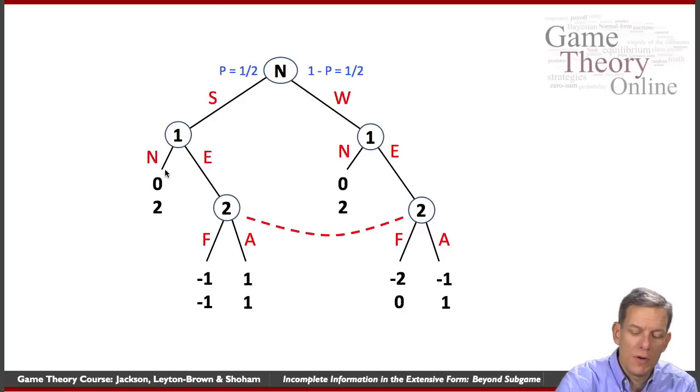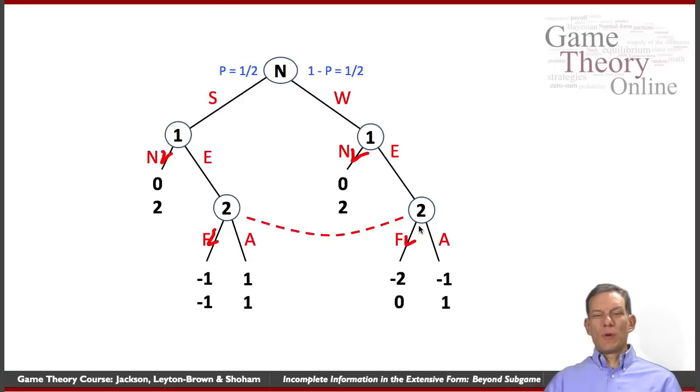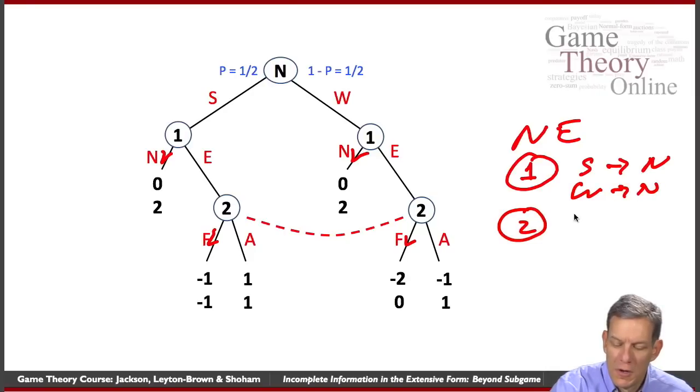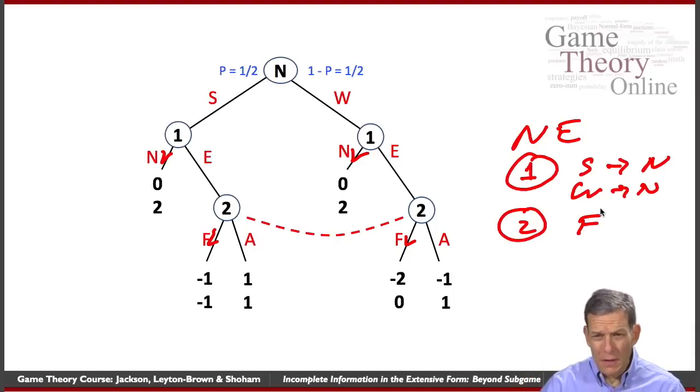So let's take a peek at one where firm one does not enter. So no matter what, firm one does not enter, whether they're strong or weak. And firm two plans on fighting. So firm two says, I'm going to fight you if you enter. And firm one says, oh, that's bad, I'm going to get negative payoffs. Therefore, they don't enter. So that's one Nash equilibrium. A Nash equilibrium is one, if they're strong, they don't enter. If they're weak, they don't enter. And firm two only has one information set, and they fight. So that's a Nash equilibrium. It's also subgame perfect, given that there's only one subgame in this.